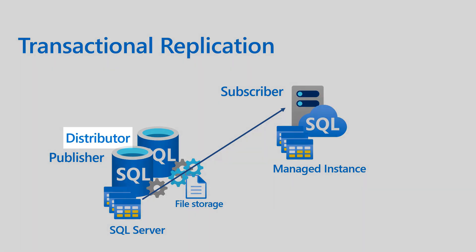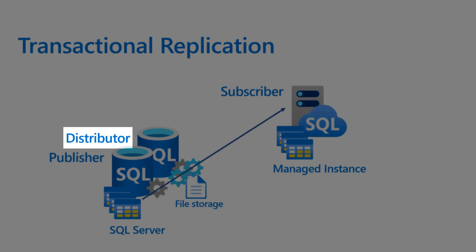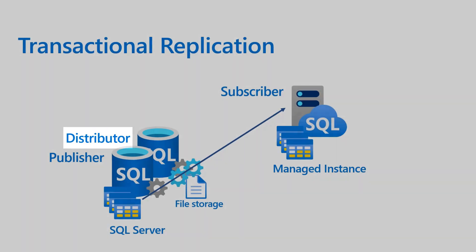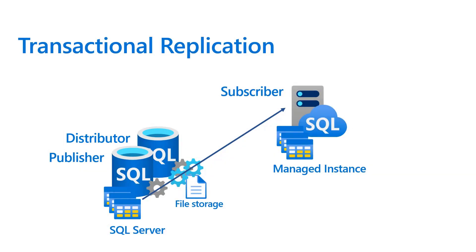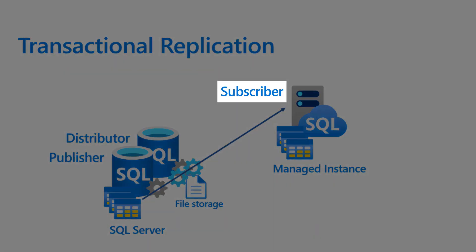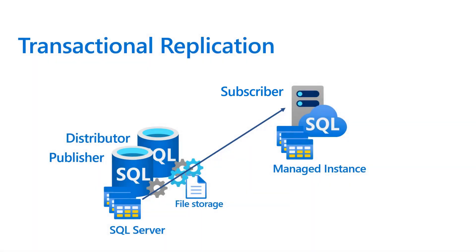Distributor collects the changes from the publisher and sends them to the subscriber. Distributor acts as a reliable storage and forwarder and it can work with multiple subscribers. Finally, the subscriber receives all the changes from the publisher and is the target of the replication.